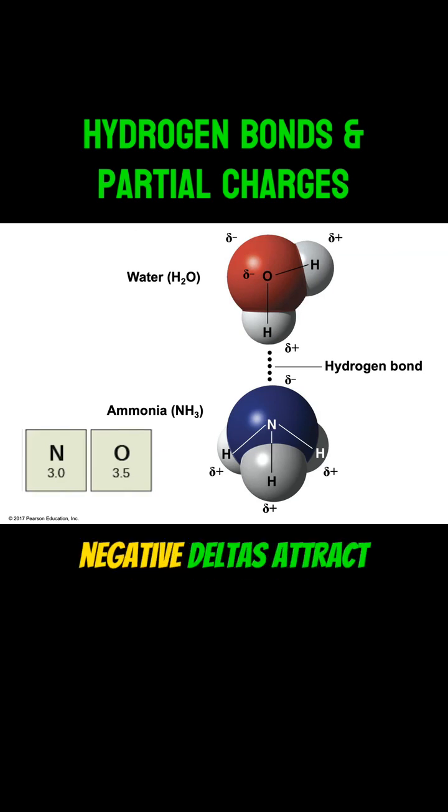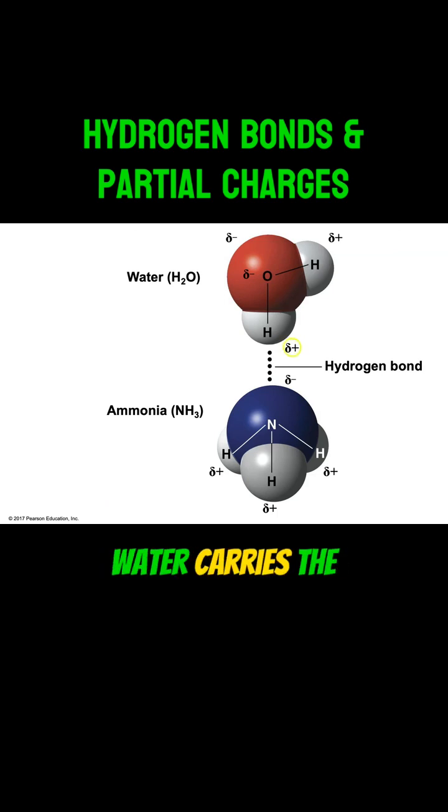The positive and negative deltas attract each other. The hydrogen in the water carries the partial positive charge, while the nitrogen of the ammonia carries the partial negative charge. These partial charges attract each other to form the hydrogen bond.